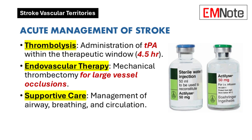How does knowing the vascular territory guide our management? Different types of strokes may require different approaches. In some cases, medications can be used to dissolve blood clots — this is known as thrombolysis — and it's most effective when administered early, as there is a limited window of time for it to be effective. In certain cases, a procedure called a thrombectomy may be performed, which involves physically removing the blood clot. The decision to pursue thrombolysis, thrombectomy, or other interventions depends on the location and severity of the stroke, allowing us to personalize the treatment plan for each patient.